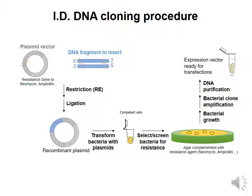You cut both the plasmid and DNA fragment with the same restriction enzymes. Then we put together the pieces and re-ligate the digested vector and the digested DNA fragment.